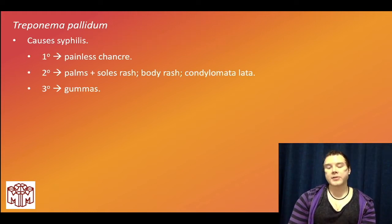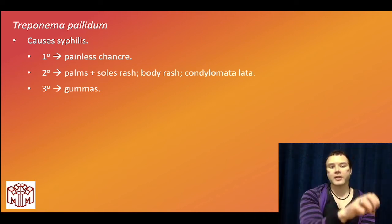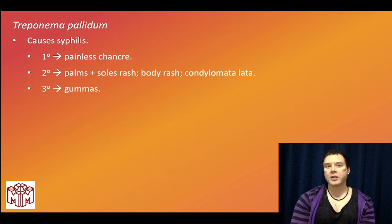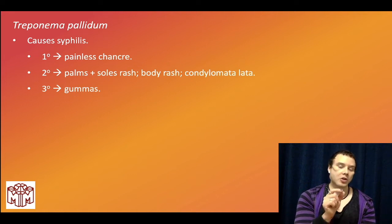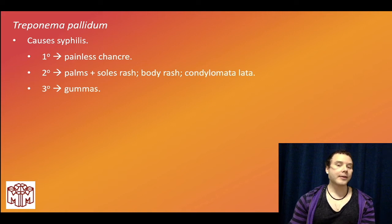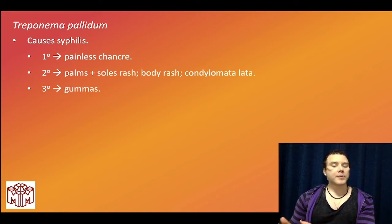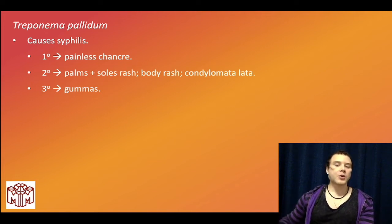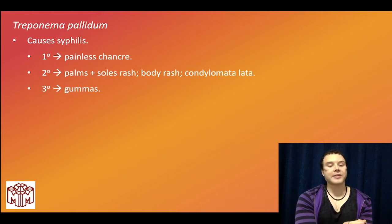Treponema pallidum causes syphilis — very high yield. Syphilis is a spirochete, referring to coil-shaped bacteria visualized with dark-field microscopy. Primary syphilis presents as a painless genital lesion referred to as a chancre. Painless is very high yield; if it's painful, that can be chancroid. HSV and chancroid are painful, but syphilis chancre is painless.